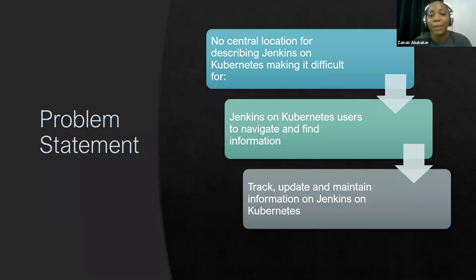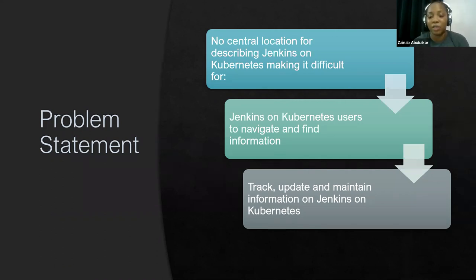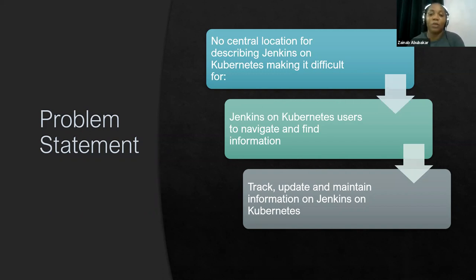Starting with the problem statement: when I began contributing to Jenkins during the Google Season of Docs technical writer exploration phase, there was no central documentation for Jenkins on Kubernetes. Jenkins on Kubernetes users did not have any central location on Jenkins.io to find information relating to Jenkins on Kubernetes. That's why we decided to work on this project, considering it's a popular topic for Jenkins users.